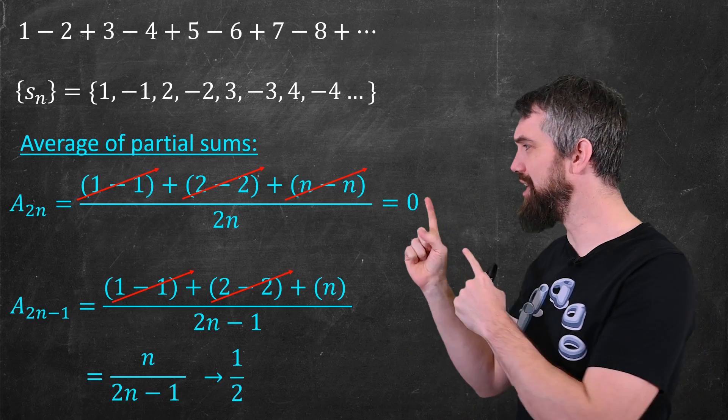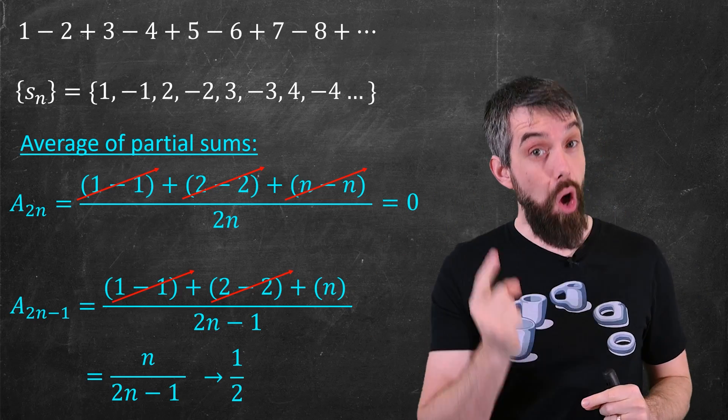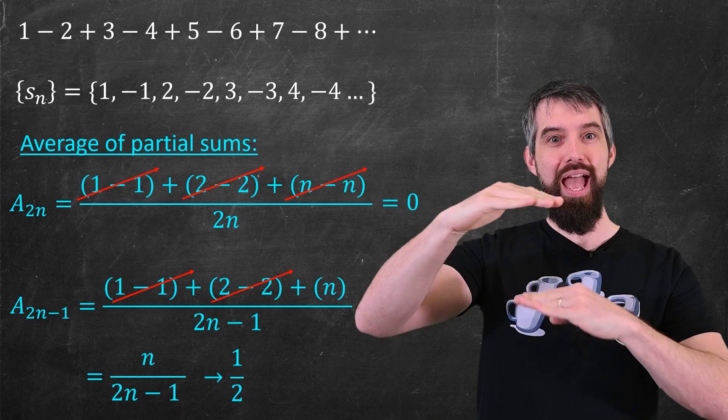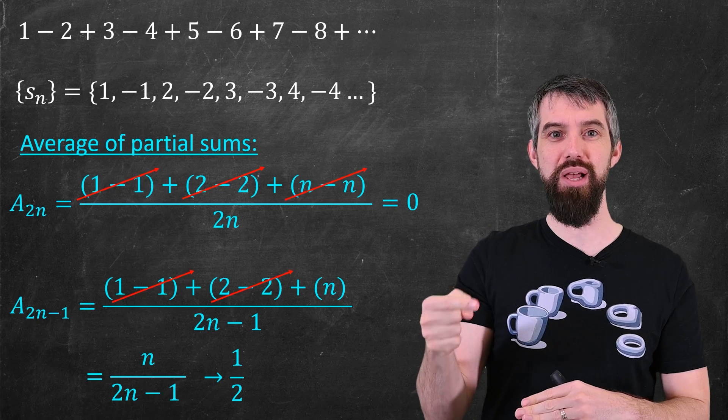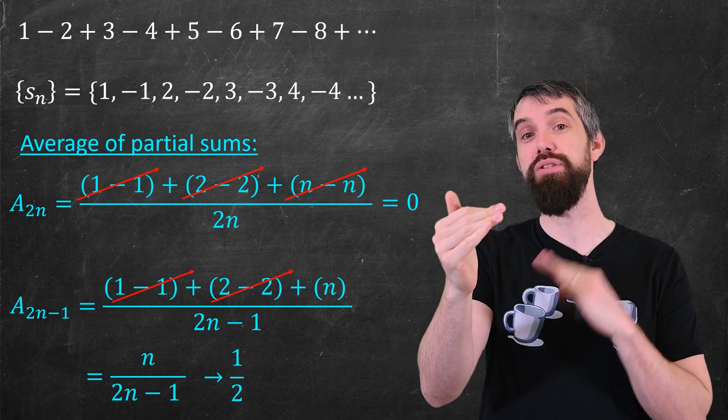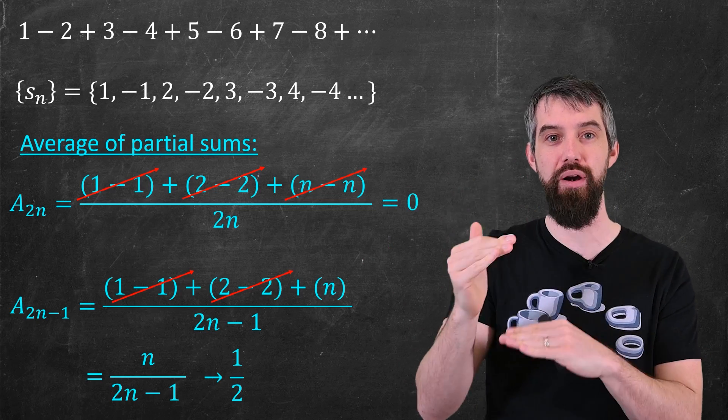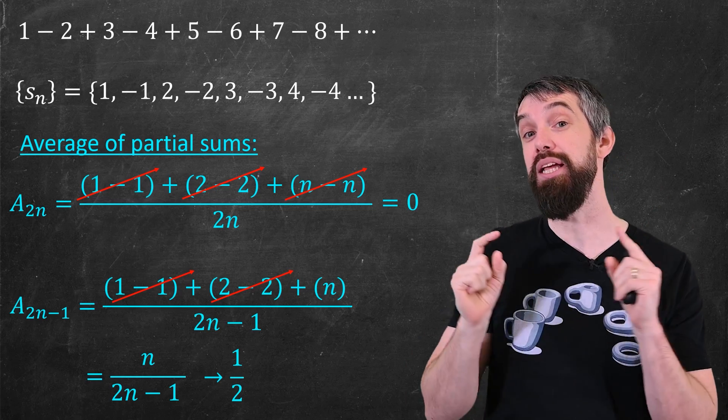And so unlike the previous example where the evens and the odds both went to the value of half, here the evens go to 0. The odds go to 1 half. And in this Cesàro summation, these average of the partial sums, it doesn't converge either. Sometimes it's 0, sometimes at half, and it keeps on bouncing around there. This is divergent in the Cesàro sense.